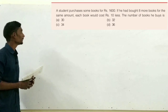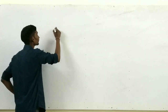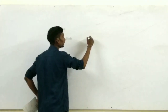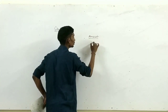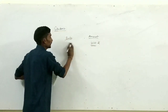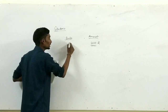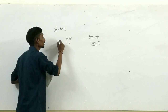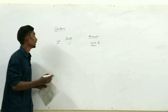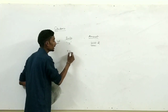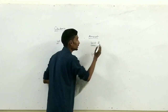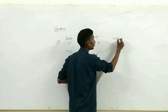इस question में क्या दिया है — एक student कुछ books खरीद रहा है, ₹1600 में। मान लेते हैं उसने x books खरीदे, 1600 रुपये में। लेकिन question में एक और condition है: अगर उसने x की जगह x+8 books खरीदे, same amount में, तो cost per book क्या होगी?